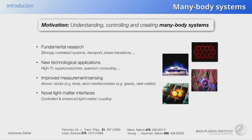The first experiments I present are done with rubidium, and you'll see how you can find complementary features of the two species. Let me start at the basics and motivate what we are doing. What we want to do in our work is basically to understand, control, and create many-body systems. All of these aspects are important — the understanding underlies everything, but we also want to use new knobs and techniques to control those systems and create new states with very interesting properties.